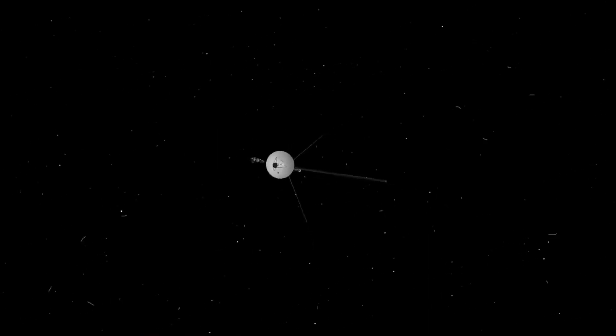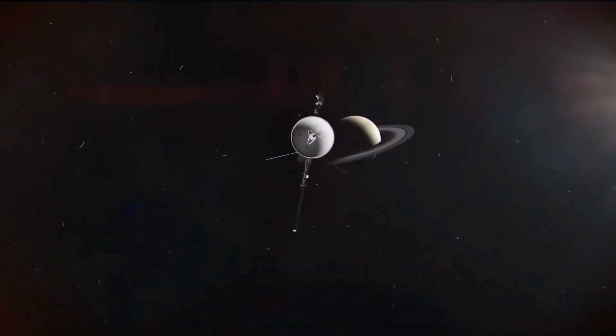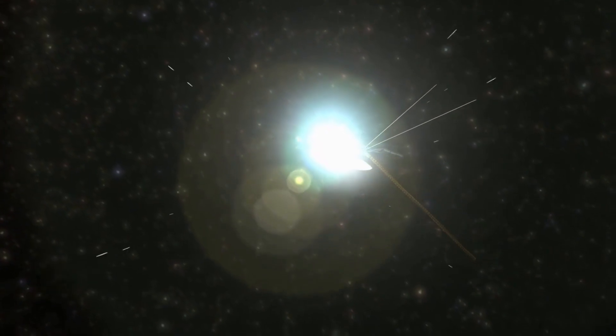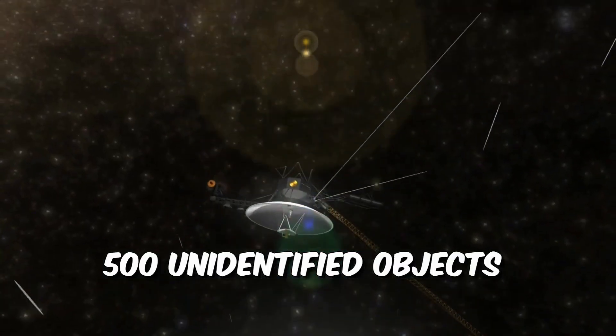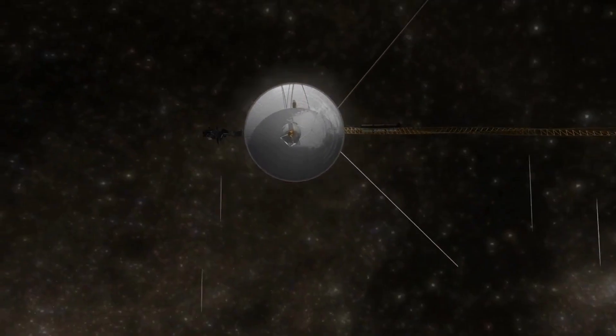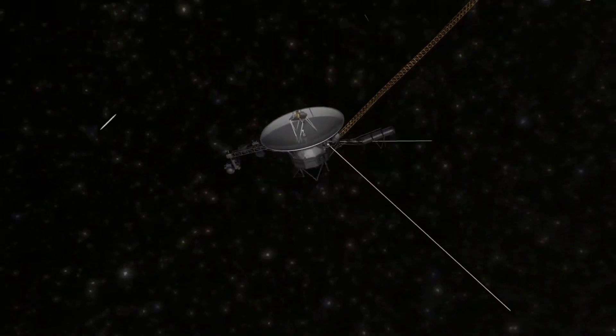And guess what? Our trusty Voyager 1 recently stumbled upon a whopping 500 unidentified objects entering our solar system. Now that's what I call an interstellar surprise.